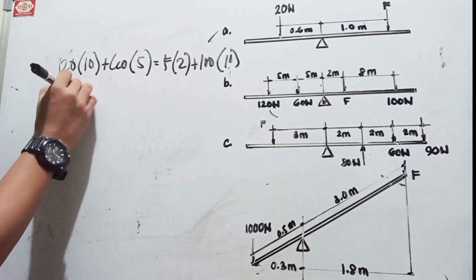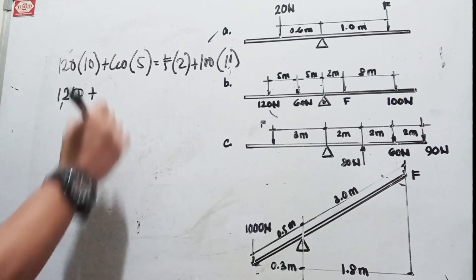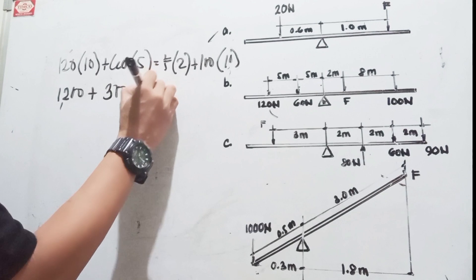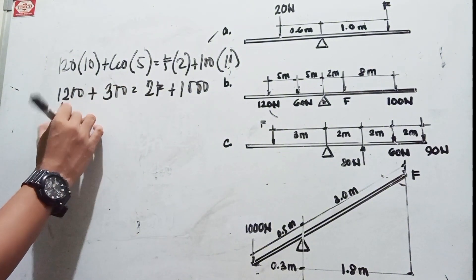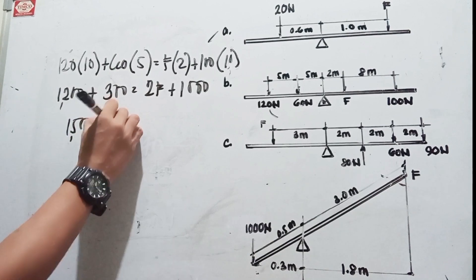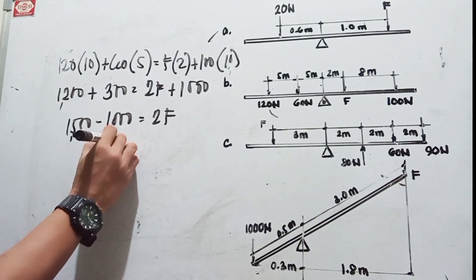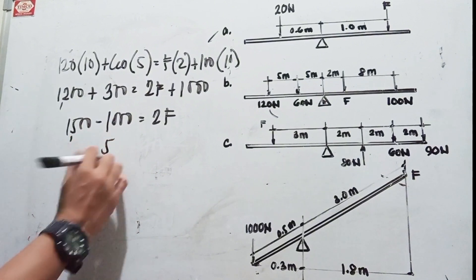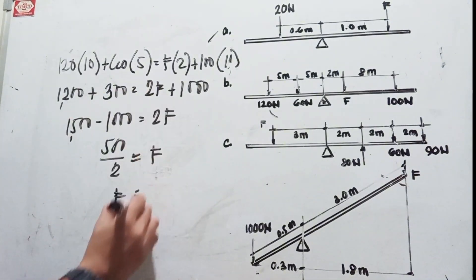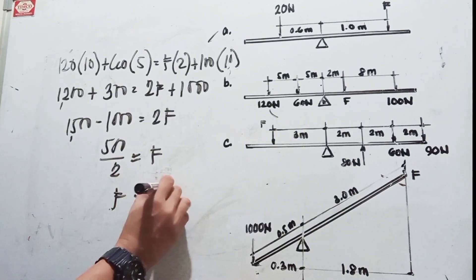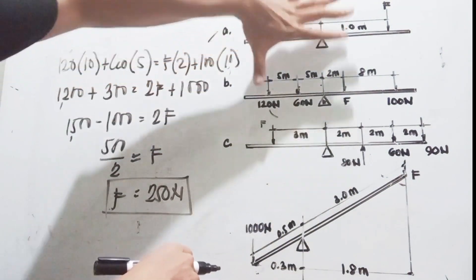Computing: 120 times 10 is 1,200, plus 60 times 5 is 300, equals 2F plus 100 times 10 which is 1,000. So 1,500 equals 2F plus 1,000. Transposing: 1,500 minus 1,000 equals 2F, so 500 divided by 2 equals F. Therefore your force is equal to 250 Newtons — you need 250 Newtons at a distance of 2 meters for equilibrium.